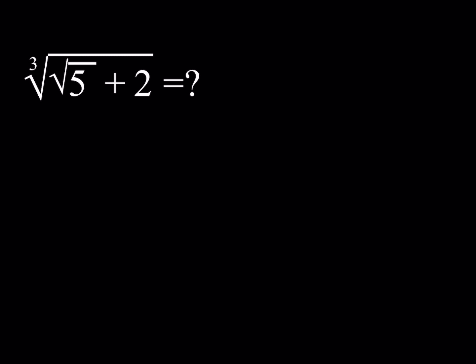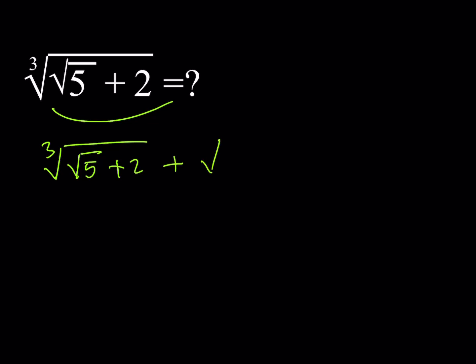We're going to take advantage of conjugates. So I'm going to write the following expression: the cube root of (√5 + 2) plus the cube root of (√5 − 2). I'm going to call this expression x, because I don't know what it is.